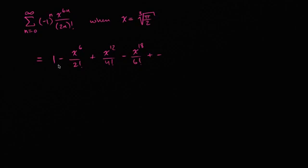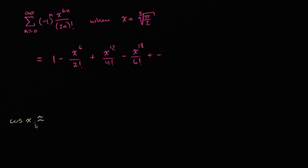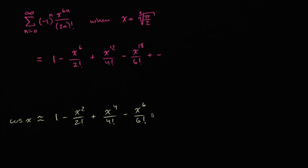Offhand, I don't know a function — especially a trigonometric function — that matches this, but it does look suspiciously familiar. It looks awfully close to the Maclaurin series for cosine of x, which we've seen multiple times. The Maclaurin series for cosine of x is approximately one minus x squared over two factorial, plus x to the fourth over four factorial, minus x to the sixth over six factorial. The signs match: positive, negative, positive, negative, and the factorials match too.